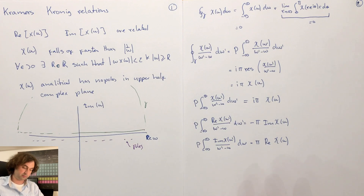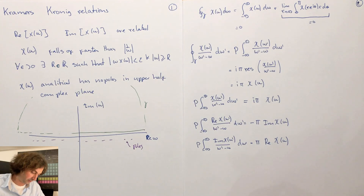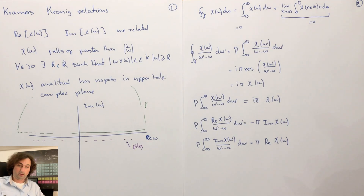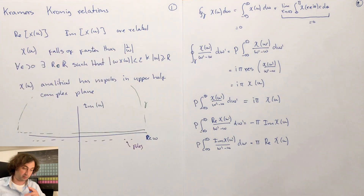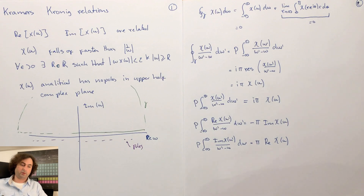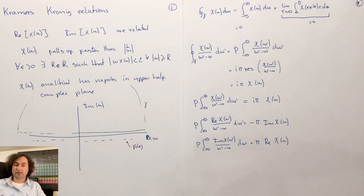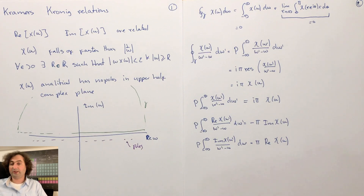In practice, calculating the real part from the imaginary part is very doable since the imaginary part falls off fast enough. Calculating the imaginary part from the real part is very hard because the real part falls off too slowly. These are very important relations because they tell you it's only a single-valued function you need to know to determine your system. The index of refractivity, the absorption, or the scattering length — each completely determines your susceptibility. Single measurements as a function of frequency are sufficient to completely determine the susceptibility of the system. Thank you very much, stay healthy, see you later.